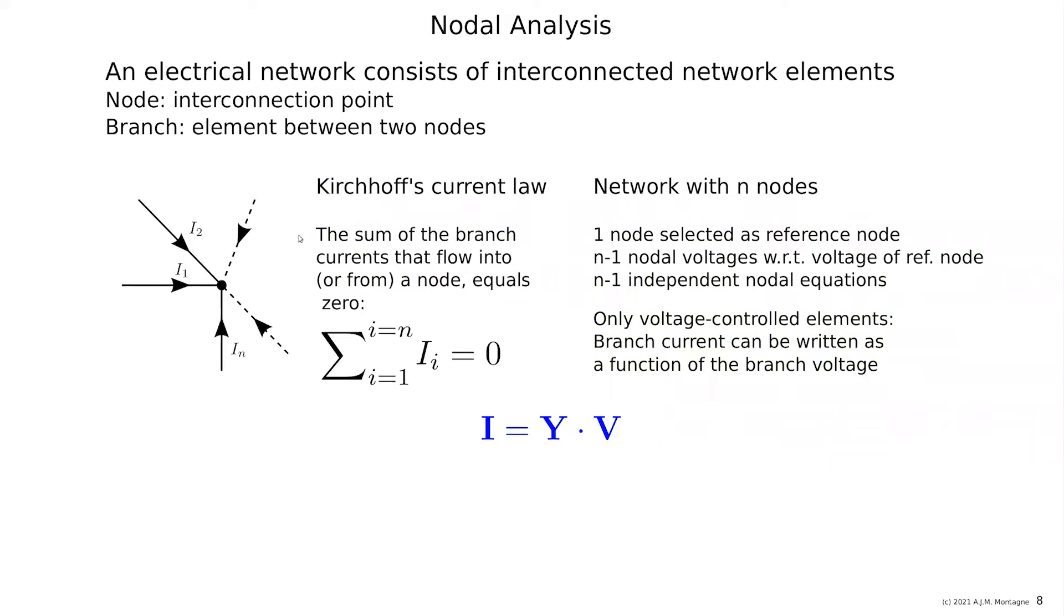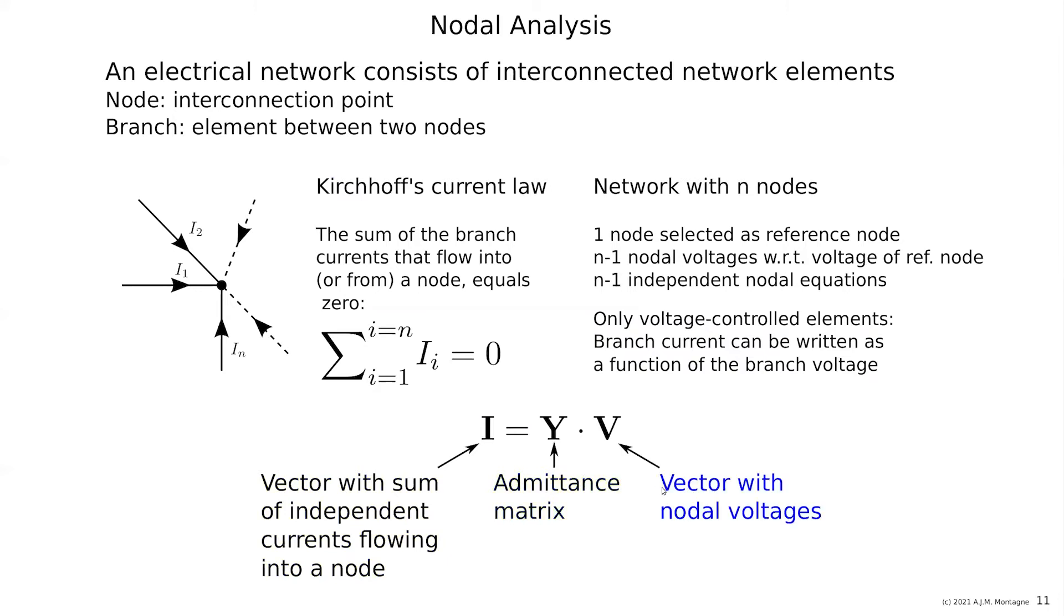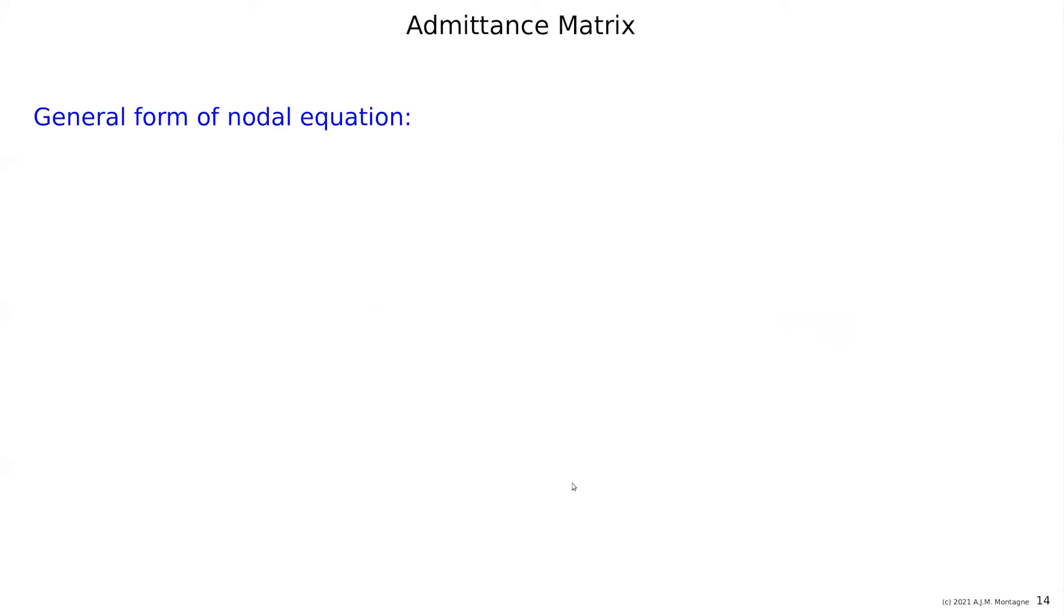So if we have the nodal analysis, we write that the sum of the currents equals the admittance matrix times the nodal voltages. So here we have the sum with the independent current flowing into a node, then the admittance matrix, and here we have the vector with nodal voltages. Maybe time to do an example after I give you the complete description of the general form of this matrix.